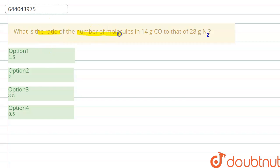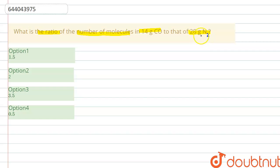The question asks: what is the ratio of the number of molecules in 14 grams of carbon monoxide to that of 28 grams of nitrogen? We need to find the ratio between the number of molecules of 14 grams of carbon monoxide and 28 grams of nitrogen. Let's first find out the molecular masses of each one of those.